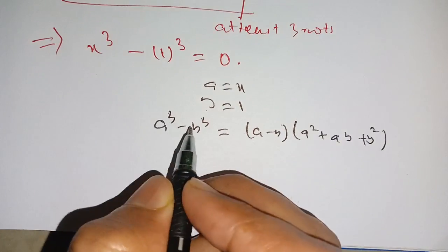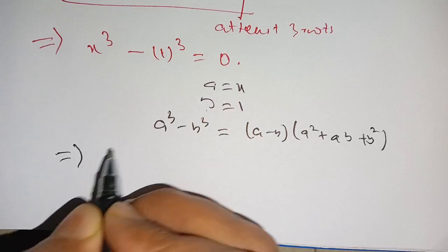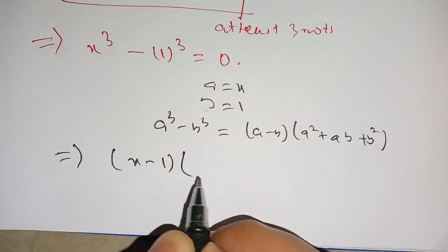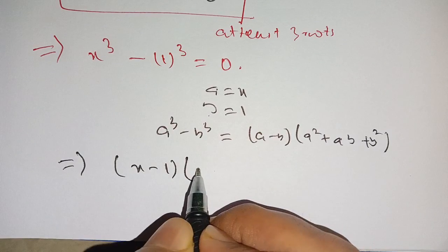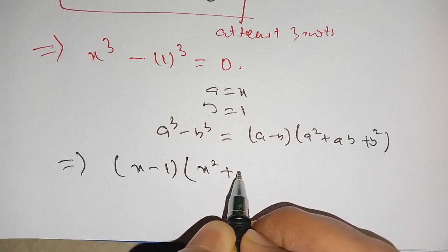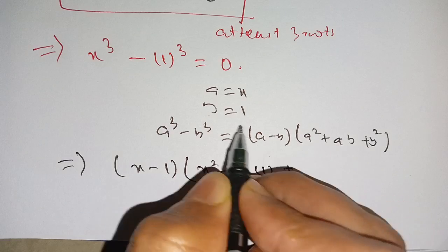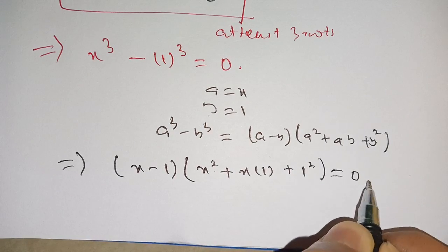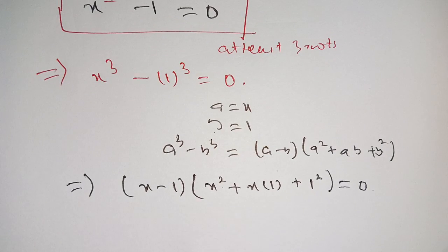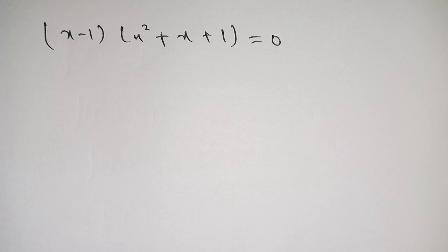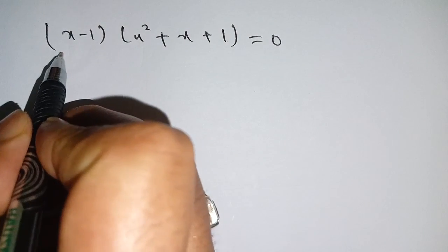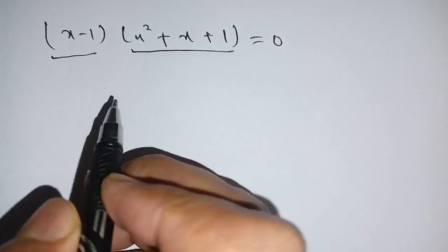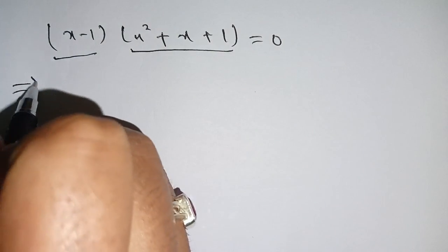Here a is equal to x and b is equal to one. Applying this, we get x minus one, times x squared plus x times one plus one squared, which is equal to zero. So it has two factors: the first term is x minus one and the second term is x squared plus x plus one.